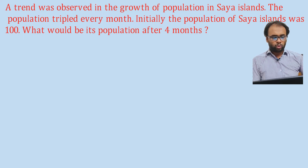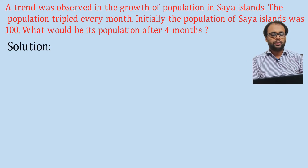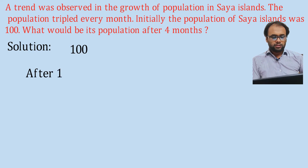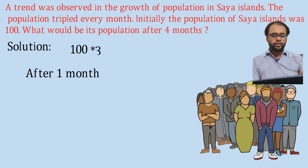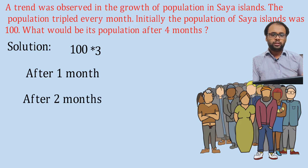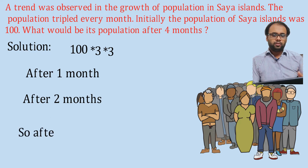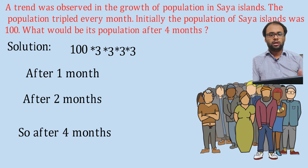A trend was observed in the growth of population in Sia Islands. The population tripled every month; initially the population of Sia Islands was 100. What would be its population after four months? After one month the population would be 100 × 3, after two months 100 × 3 × 3, and after four months it would be 100 × 3^4.